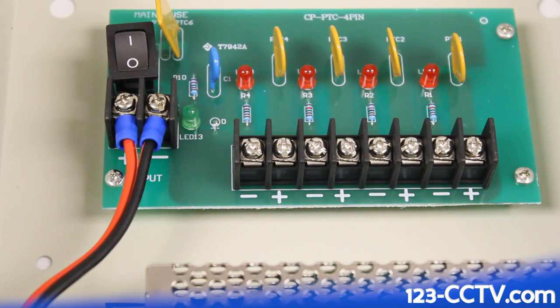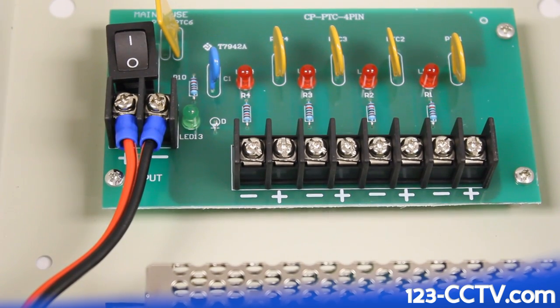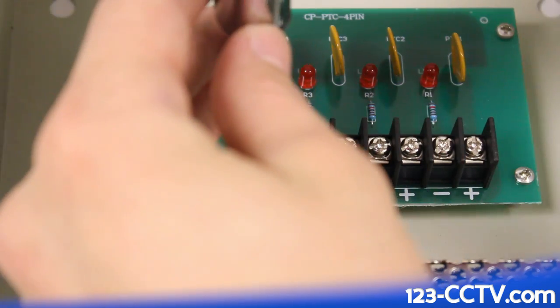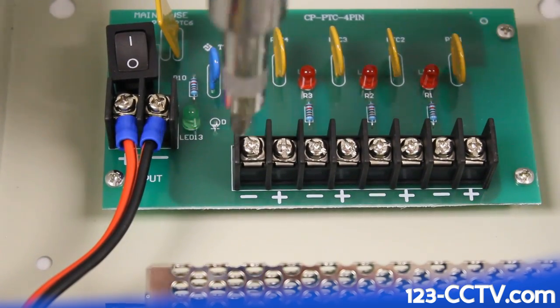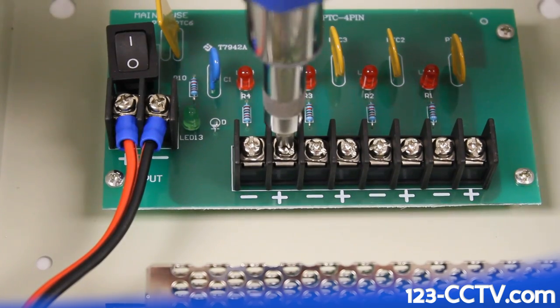Under the terminal block, you'll notice that there is a positive and a negative to show you which terminal is which. We're going to go ahead and loosen up a couple of these so we can put our cable in. About three or four full turns will do it.